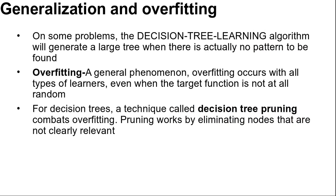That's about information gain. Now, generalization and overfitting. On some problems, the decision tree learning algorithm will generate a large tree when there is actually no pattern to be found.